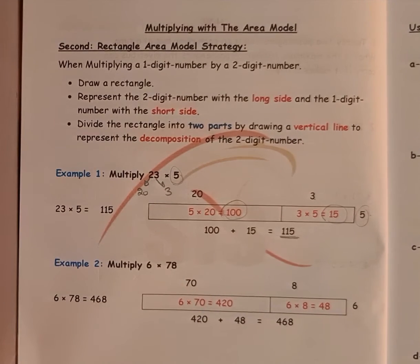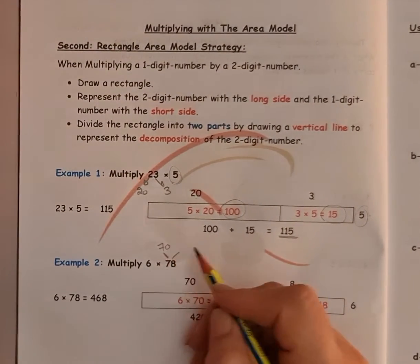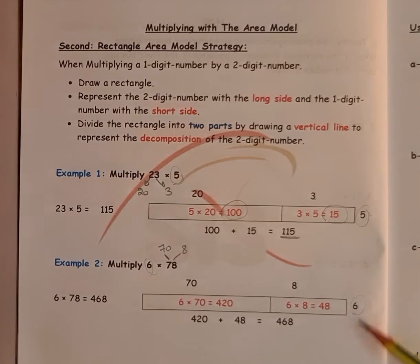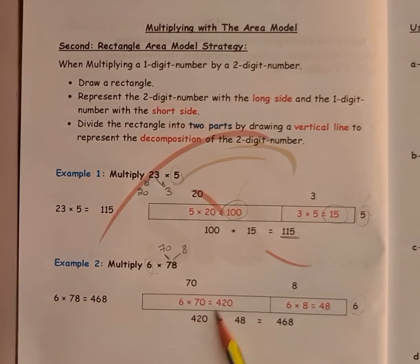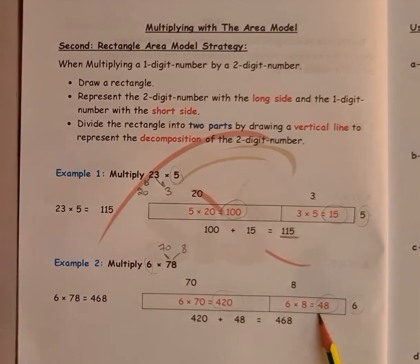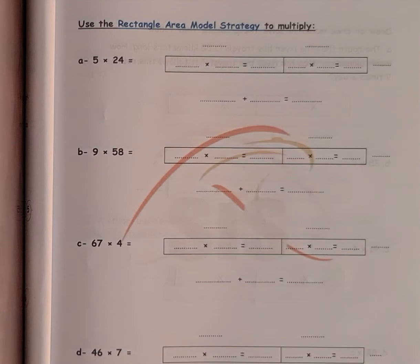Example 2: multiplying 6 by 78. I will break down the 78 — I always break down the big number — into 70 and 8. Draw your rectangle, put the tens here, the ones here, and the number you want to multiply here. So 70 times 6: kick the 0 out, 7 times 6 equals 420. Then 8 times 6 equals 48. Add them together: the answer is 468.